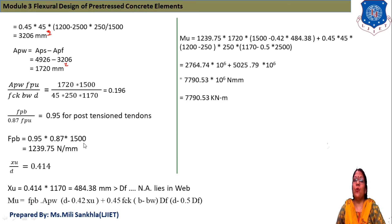FPB equals 0.95 × 0.87 × 1500, and we get 1239.75 N/mm². The ratio XU/D equals 0.414, and XU equals 0.414 × 1170, which equals 484.38 mm. This is greater than depth, so the neutral axis is lying in web.